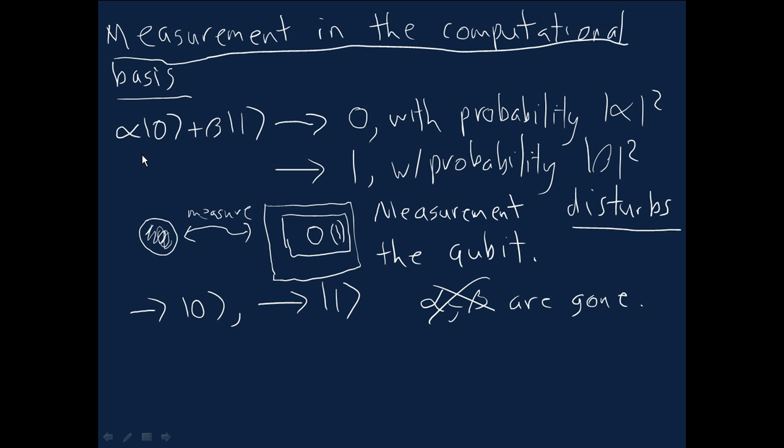And you might imagine looking at, say, just the real component of that complex number, storing an infinite amount of classical information in the binary expansion for the real part of that number. And if you could read out alpha exactly in quantum mechanics, then it would be possible to extract all of that information.